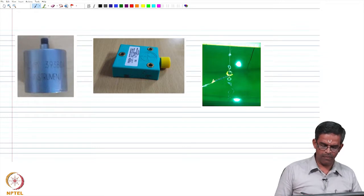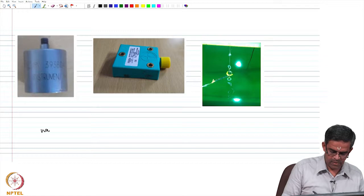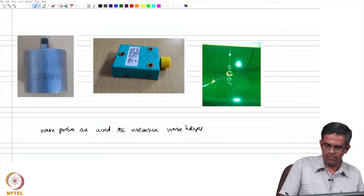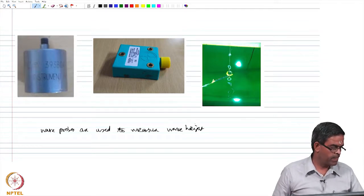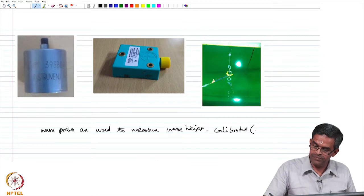Wave probes are used for measuring the wave height. During the test run of the experiment, they are calibrated to know the error, if at all any preset error.